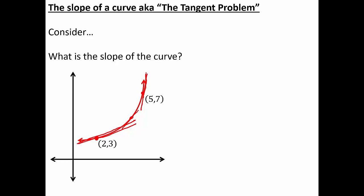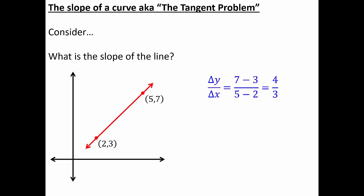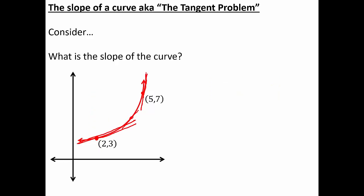A line has the same slope everywhere — no matter where you measure it, the slope is the same for every pair of points. But with a curve, the slope is constantly changing, which makes it a much more complex question.